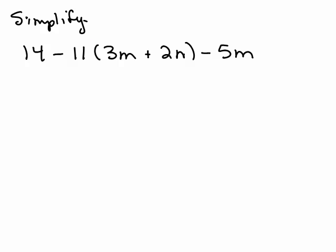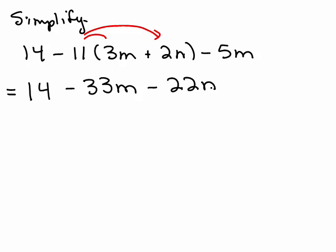Why don't you try this one? Put it on pause and try it, and then follow along with me as I do it. So inside parentheses, I have unlike terms, so I can't combine. So the next thing would be multiplication, which is right here, and that's the distributive property again. But remember, you're not only distributing 11, you're distributing the negative along with it. So it's negative 11 times each term in parentheses. So remember not to do 14 minus 11. No, so we still have 14, and now negative 11 times 3m is negative 33m. Negative 11 times 2n is negative 22n, so I've done my distributive property. The minus 5m is not in the parentheses, so you don't distribute across to the negative 5m, you just write that term down.